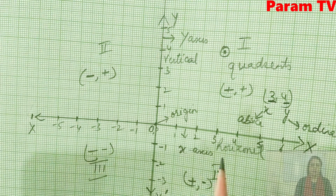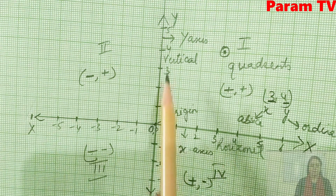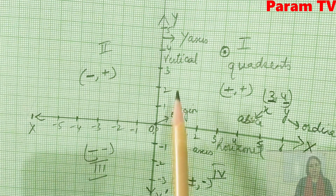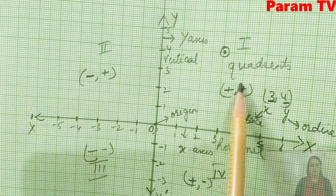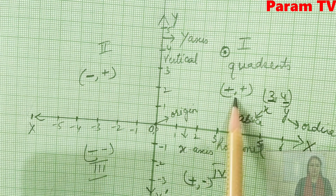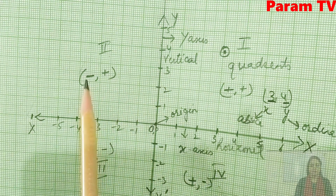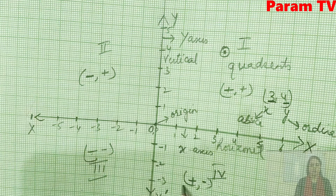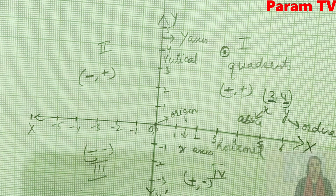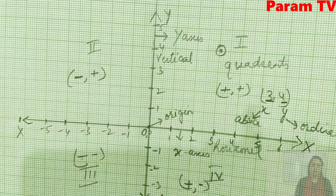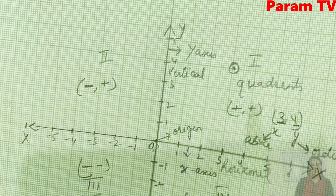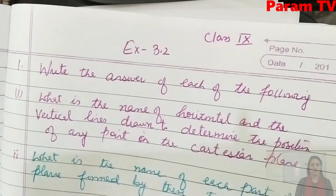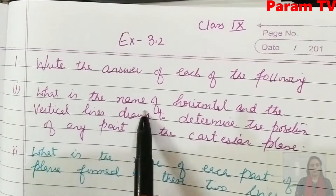To summarize: x-axis is the horizontal line, y-axis is the vertical line. The coordinates in the four quadrants are: both values plus (1st), minus-plus (2nd), minus-minus (3rd), and plus-minus (4th). Now let's start exercise 3.1.